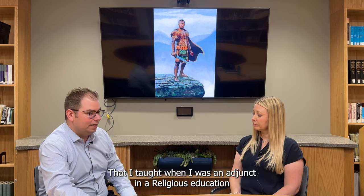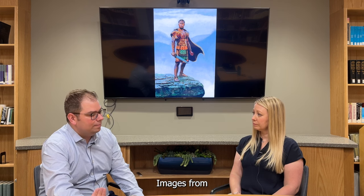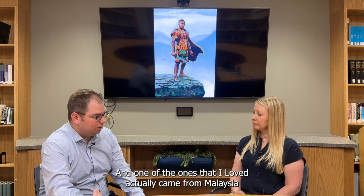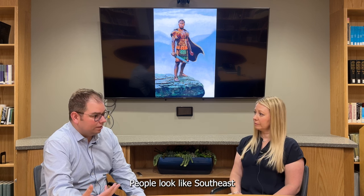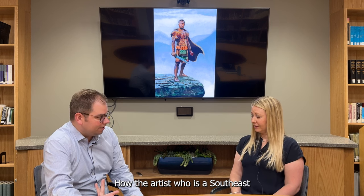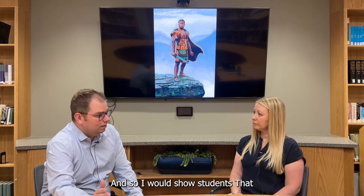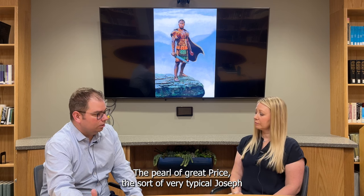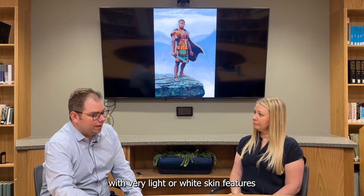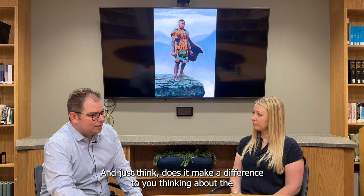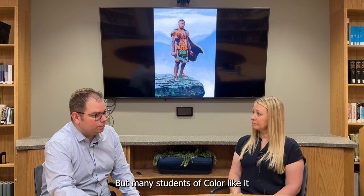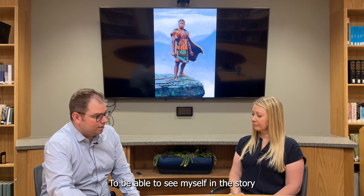In one of my classes when I was an adjunct in religious education at BYU, I used images from the church's global art competition portraying the first vision. One of the ones I loved came from Malaysia — it's painted in a very Southeast Asian style and the people look like Southeast Asians, as the artist imagined them. I would show students that painting alongside what's in front of the Pearl of Great Price — the very typical Joseph Smith looking up in the grove with very light or white skin features — and just ask: does it make a difference to you thinking about the racial characterizations here? For many of my white students, they didn't really care that much, but many students of color said it really means something to be able to see themselves in the story.